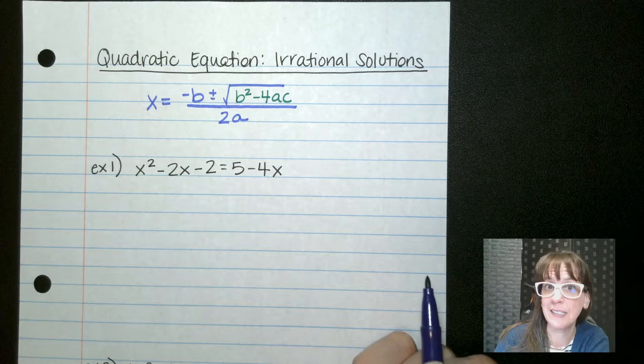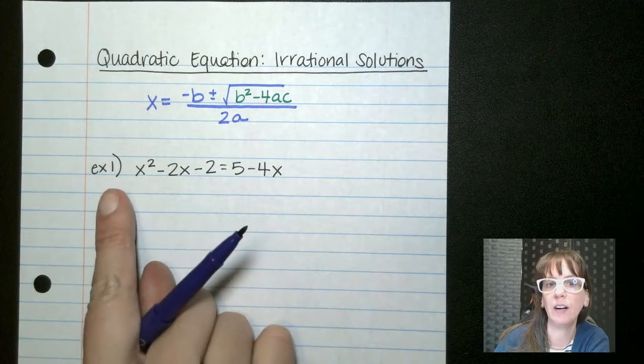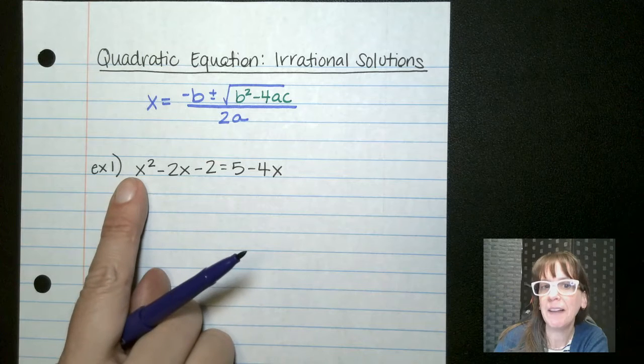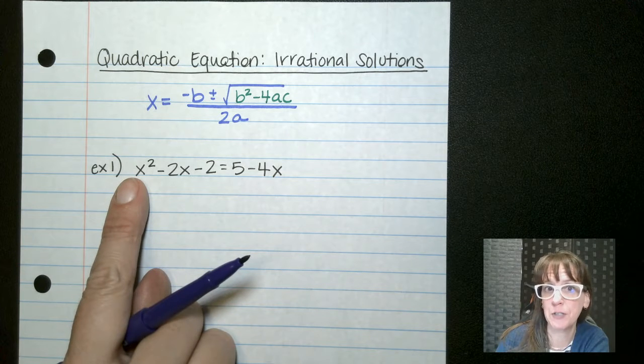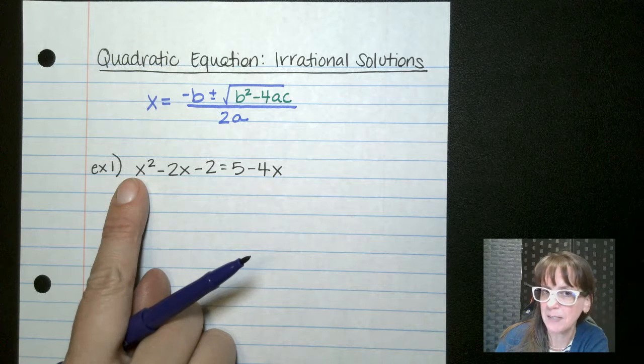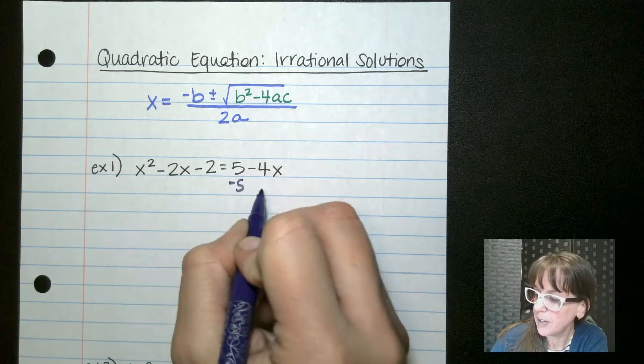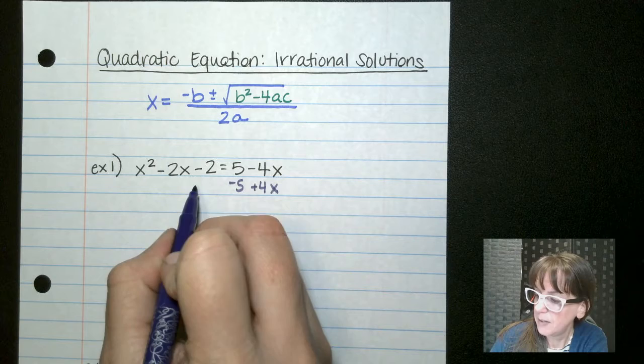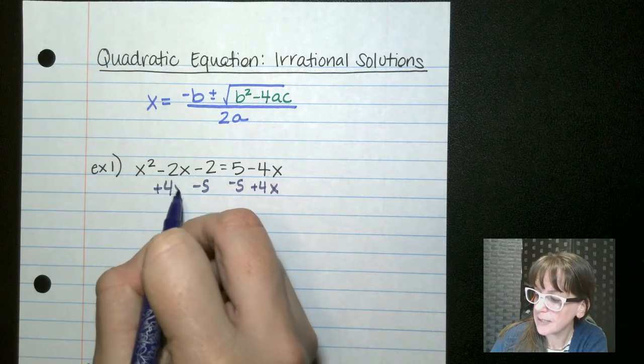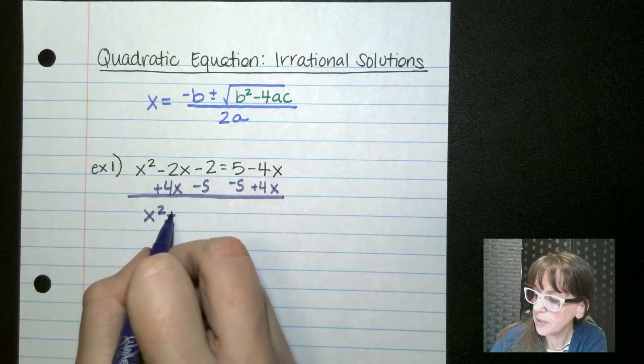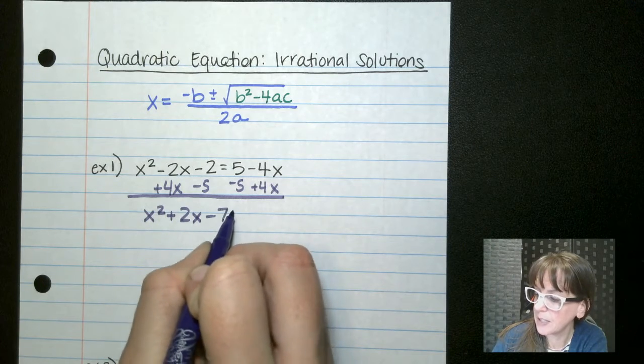First things first, we have to get these into order. So we want to get all of our variables, we want to set it equal to zero. Now you don't have to have a positive first term, but I do like to have a positive first term. So I'm going to leave all this over here and move these guys. Minus 5 plus 4x. Okay, so when I do that I get x squared plus 2x minus 7 equals zero.